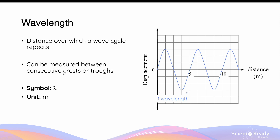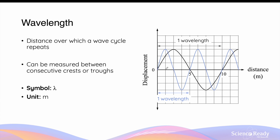Another easy way to measure the wavelength of a transverse wave is by measuring the distance between consecutive crests, which are the maximum points of the wave, or consecutive troughs of the wave — and these are both equal to 5m. In physics, wavelength is often represented by the Greek symbol lambda, and the SI unit for wavelength is the same as distance, which is meters. Here I have another wave in black, which demonstrates a wave of a longer wavelength. You can see it takes 10m for the wave to start a new cycle, and the distance between consecutive crests of the second wave also equals 10m.